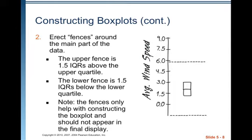Erect fences around the main part of the data. The upper fence is 1.5 IQRs above the upper quartile. The lower fence is 1.5 IQRs below the lower quartile. The fences only help with constructing the box plot and should not appear in the final display. What they're going to do is anything that lies outside the fence is an outlier. So, make sure when you draw them, you do them really lightly so that you can erase them.